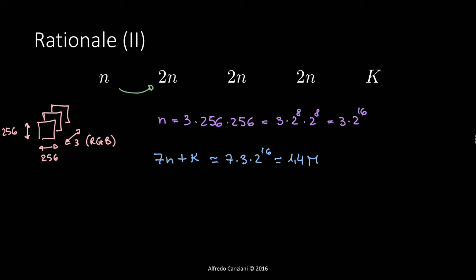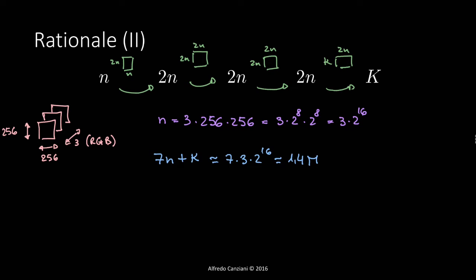To go from the first layer to the second we use a matrix of height 2n and width n, then square matrices of 2n×2n, and finally K×2n. Counting all multiplications and additions: 2n² + 2×(4n²) + 2Kn, which we can approximate as roughly 10n² MACs.